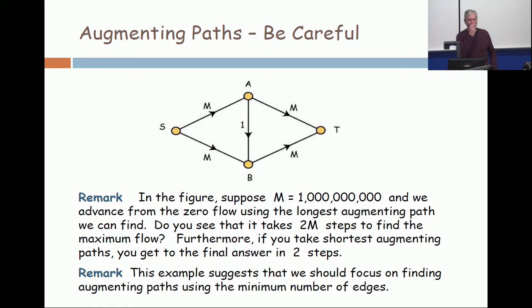Now let's solve this network iteratively. But every time we look for an augmenting path, we're going to take one which uses the maximum number of edges. So we initialize our computation by putting flow zero on every edge. The value of the initial flow is zero. Now we're going to improve it.